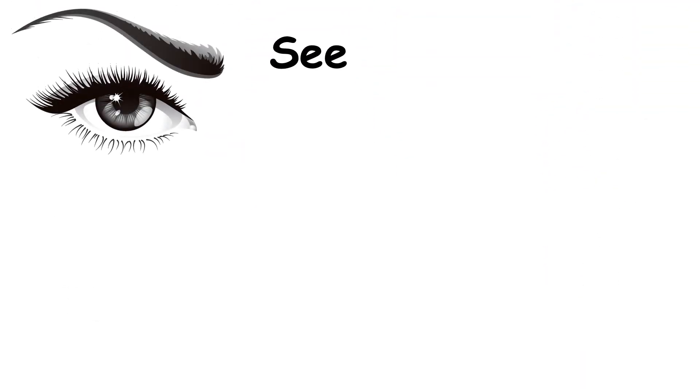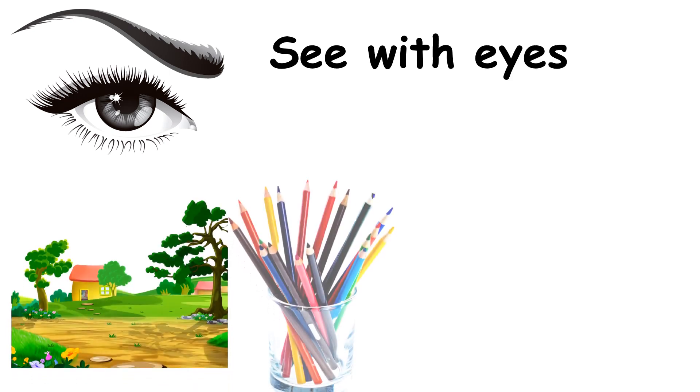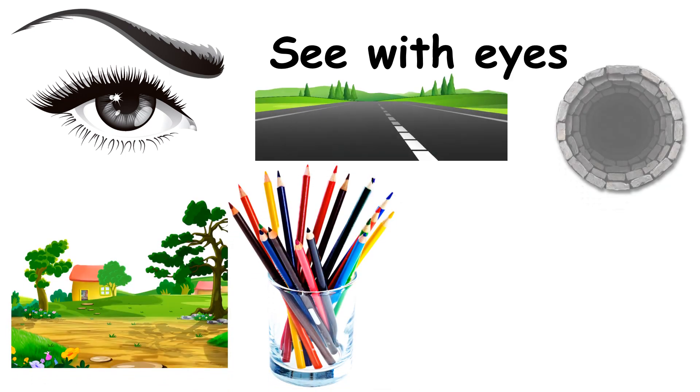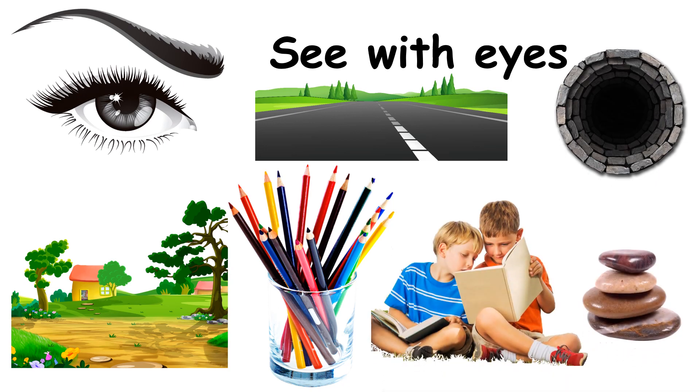Eyes are used for seeing. We can see our surroundings, colors, distance, depth, text, shapes, etc.